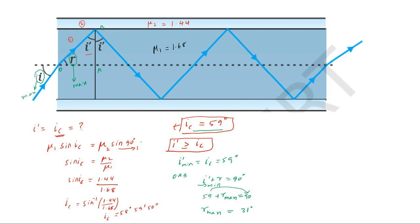Now applying Snell's law at the air-to-fiber interface: the air medium has refractive index 1 (rare medium), and the fiber medium has refractive index mu₁ = 1.68. So: 1 × sin(i_max) = 1.68 × sin(R_max), where R_max = 31°.